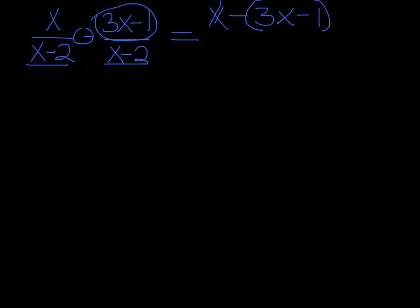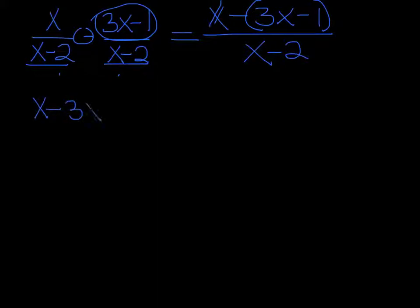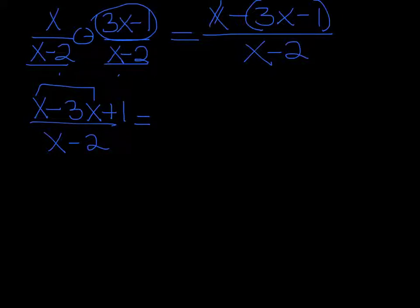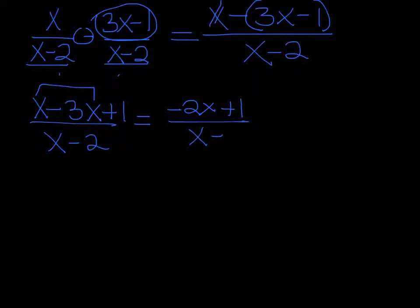That's very important — that's going to mess up a lot of people. And then we have over our common denominator, x minus 2. So now on the top I have x minus 3x, and then minus minus 1 is plus 1, over x minus 2. When we combine like terms, x minus 3x is negative 2x, and then we have plus 1 over x minus 2. And that is as simplified as it's going to get.